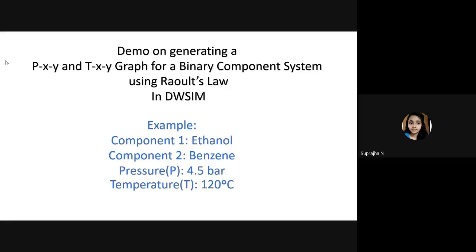Hello all. This is a short demo on generating a PXY and TXY graph for a binary component system using Raoult's Law in TWSim. The example we are going to take is an ethanol-benzene system with pressure at 4.5 bar and temperature at 120 degrees Celsius.